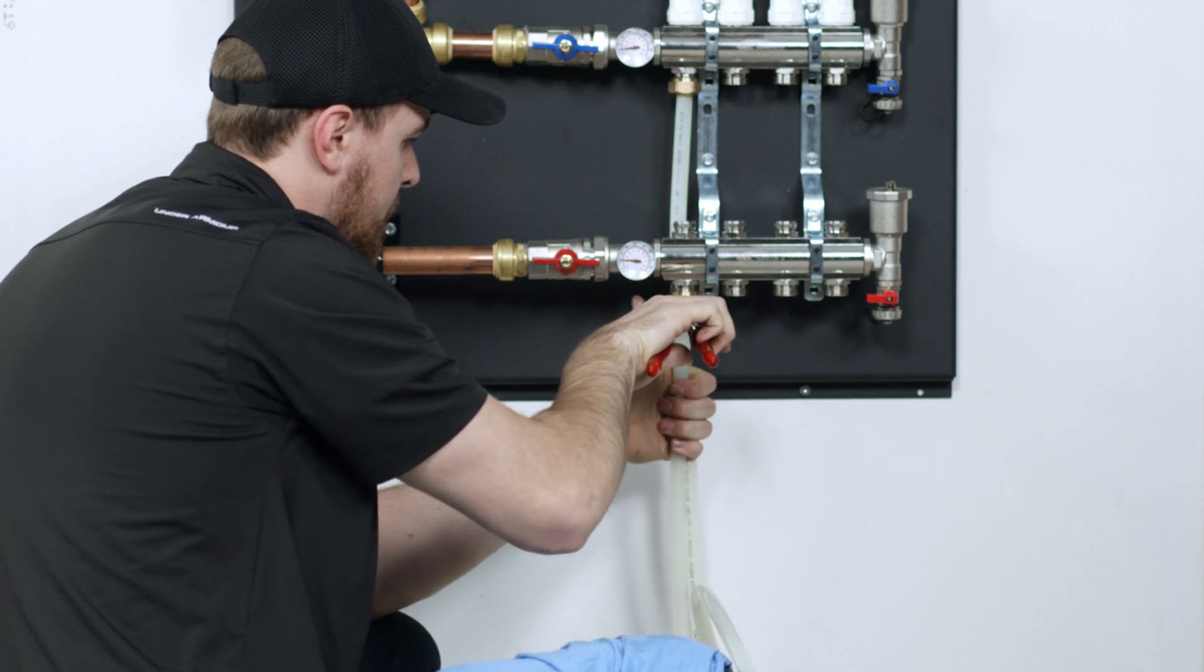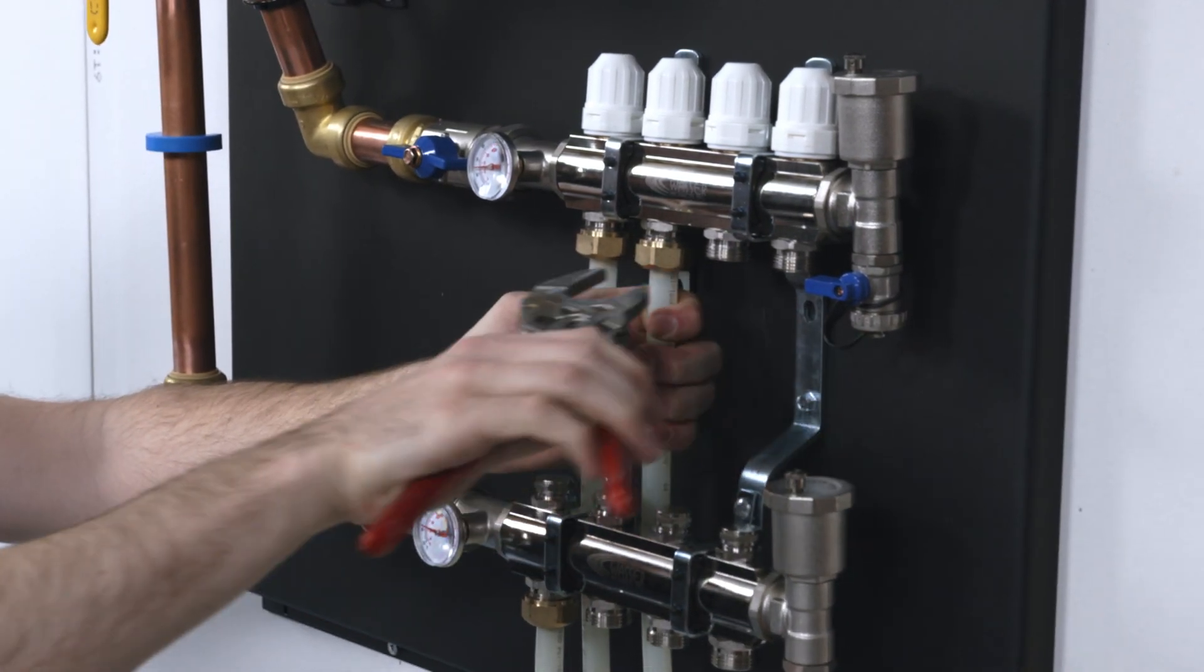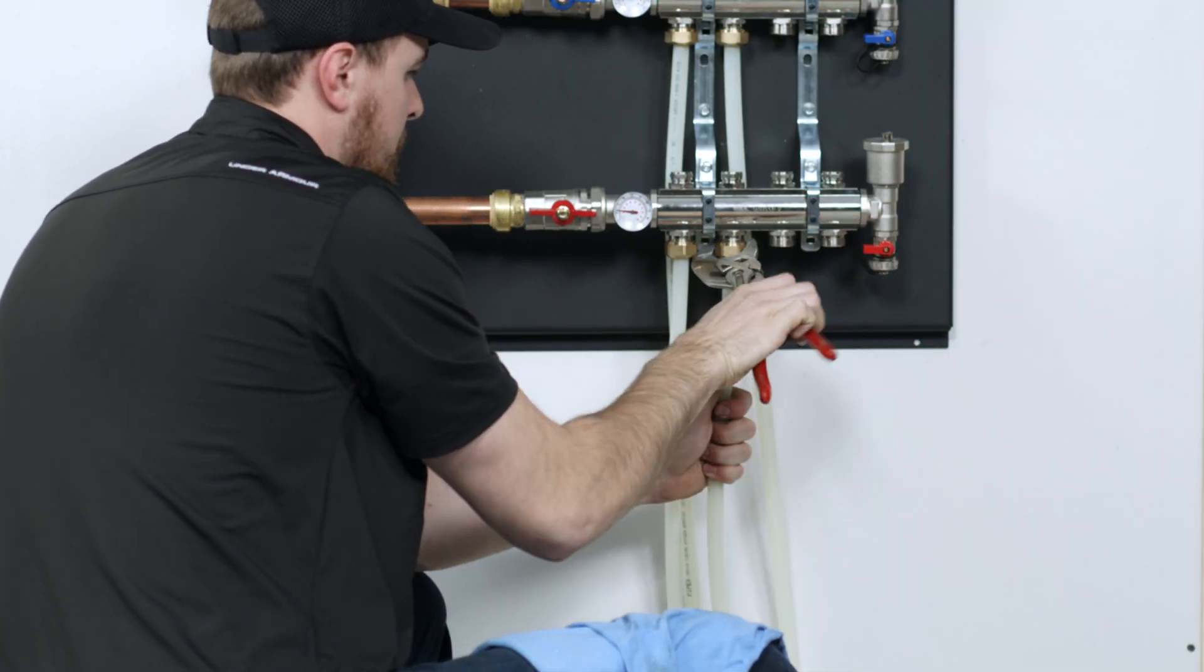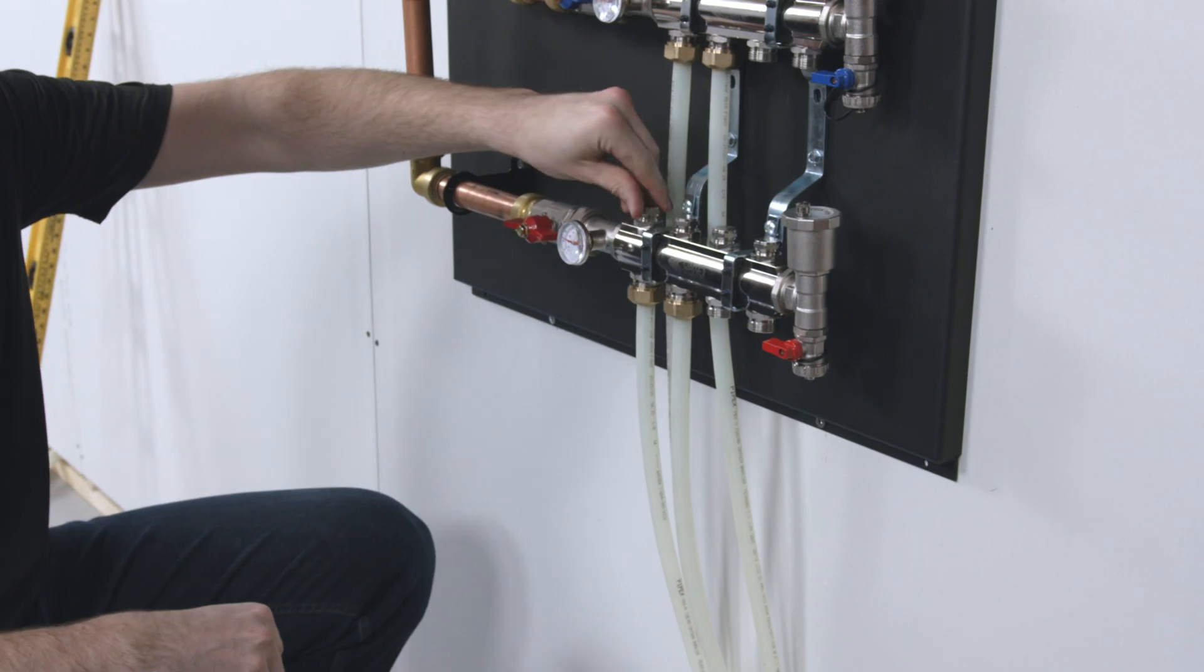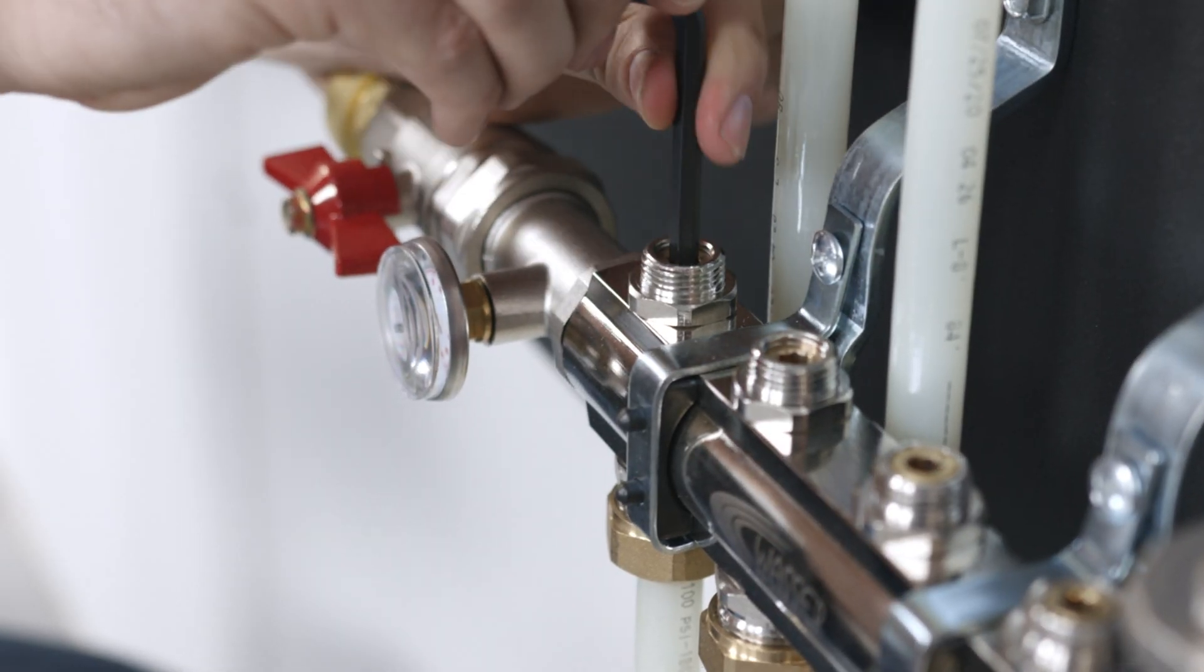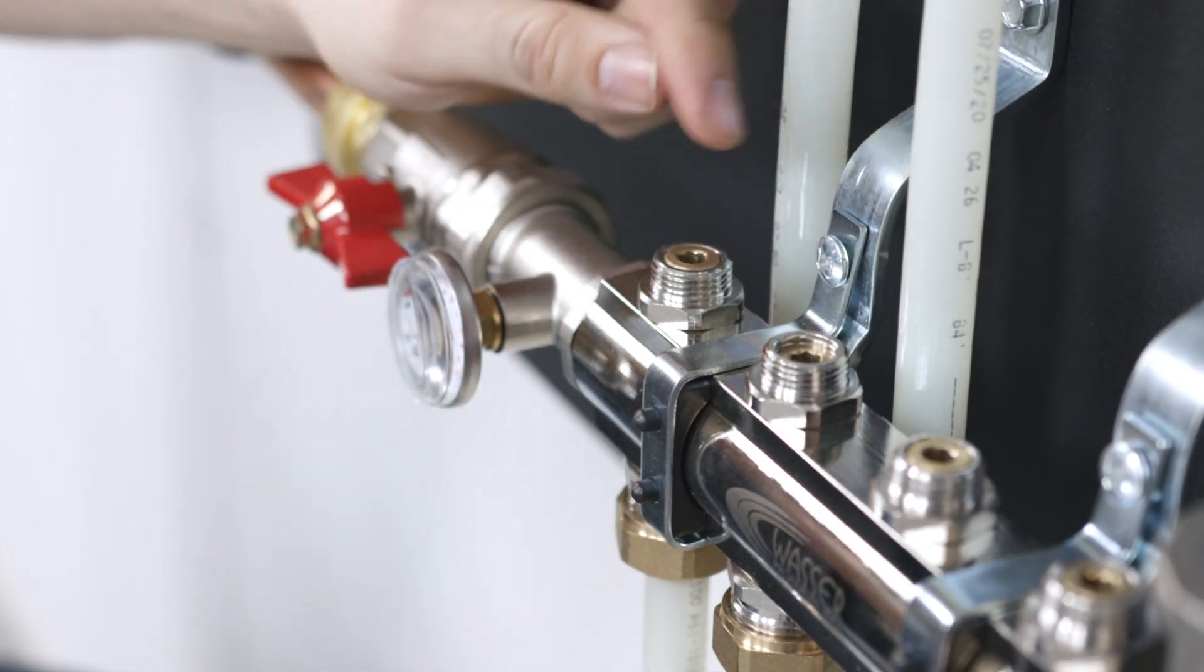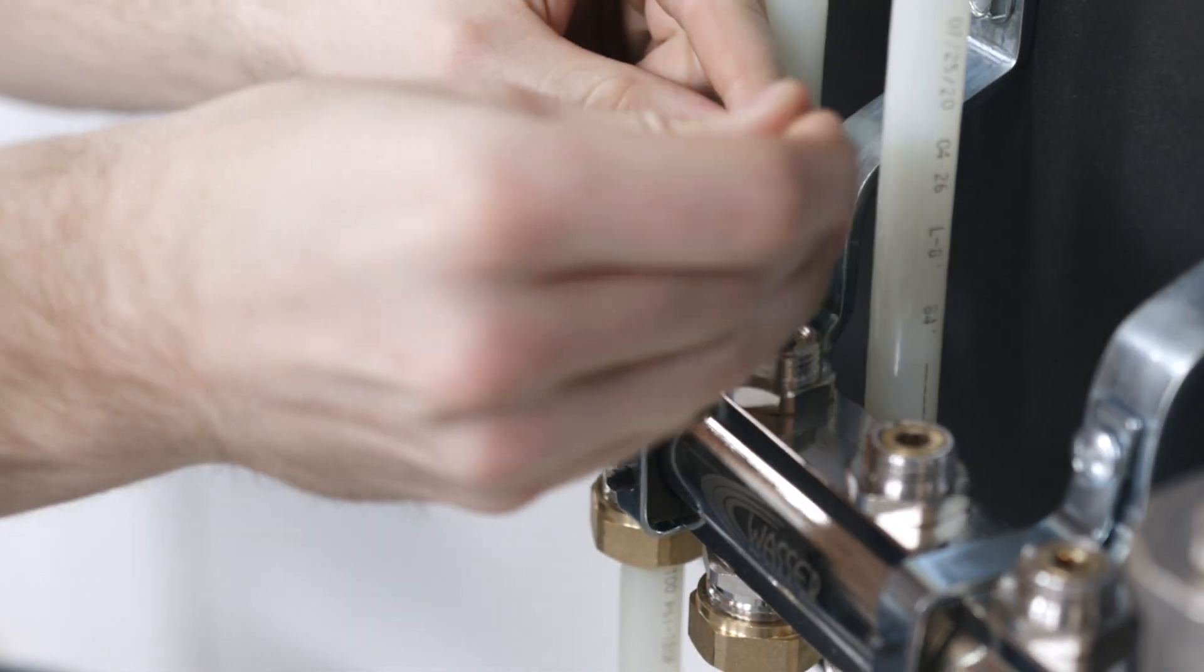Snug the manifold adapter nut with a wrench. Be careful not to over tighten. Open the manifold valves with an Allen key under the hex cap on the manifold. It will be fully open when it is flush with the top of the threaded seat.